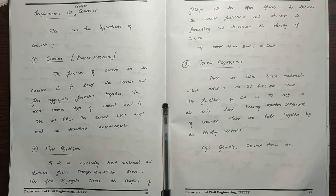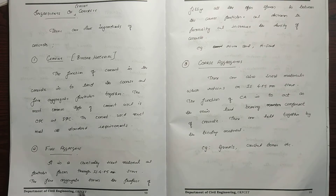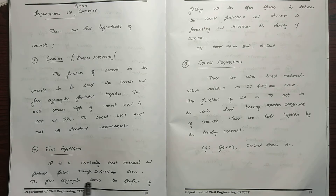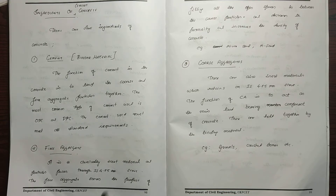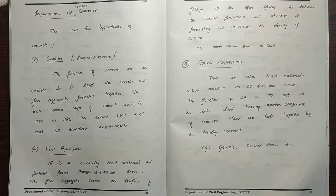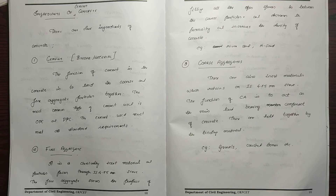The second ingredient is fine aggregate. It is a chemically inert material and the particles pass through an IS 4.75mm sieve. Fine aggregate serves the purpose of filling all the open spaces in between the coarse particles, which decreases porosity and increases the density of concrete.